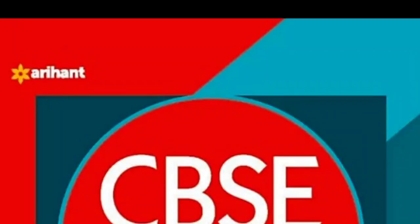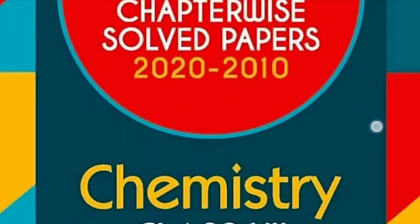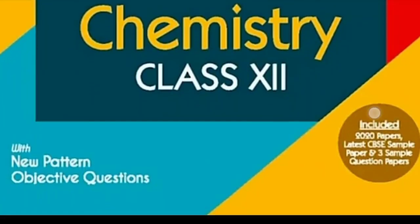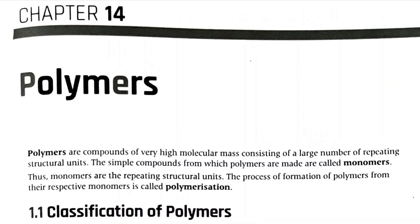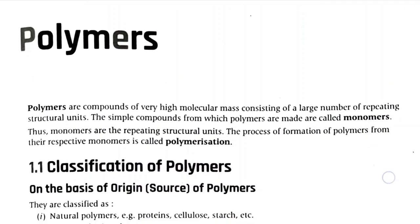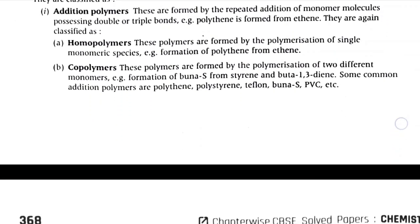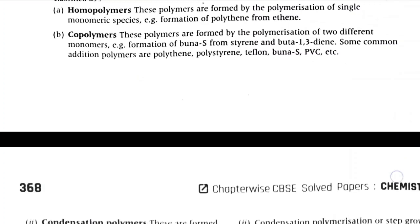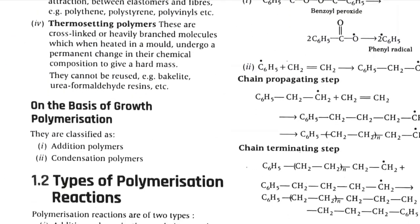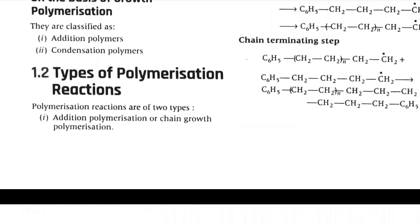Hello everyone, we are back with another video of Arihant CBSE chapter-wise topic-wise solved papers from 2010 to 2020. This time it's Chapter 14, Book 2, Chemistry Class 12th — 19 pages in this PDF. We are soon going to finish the complete book.